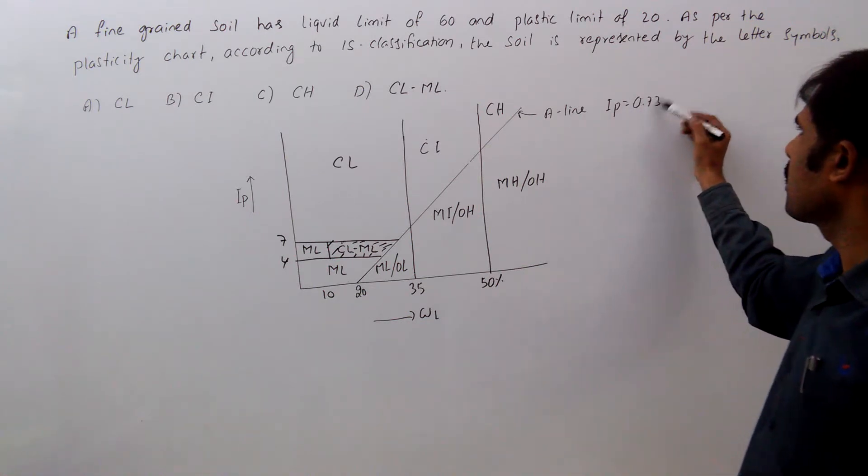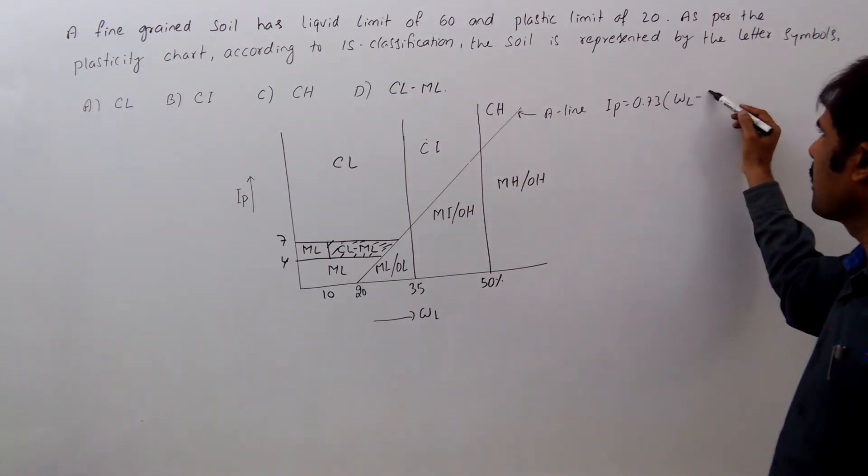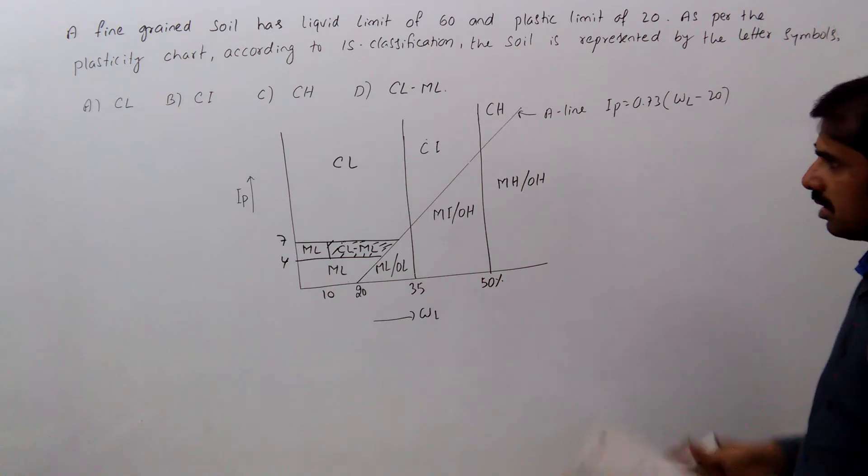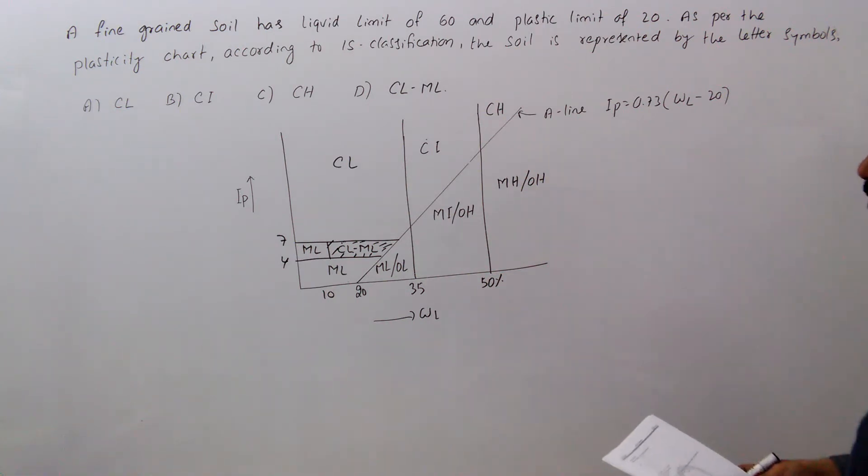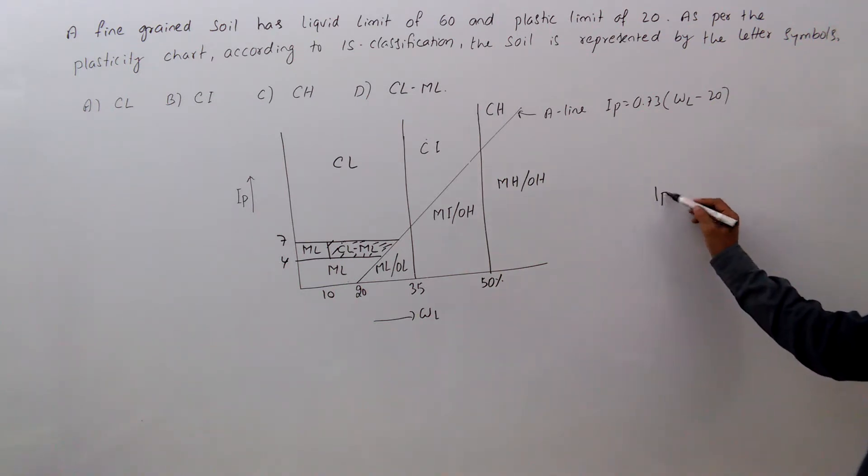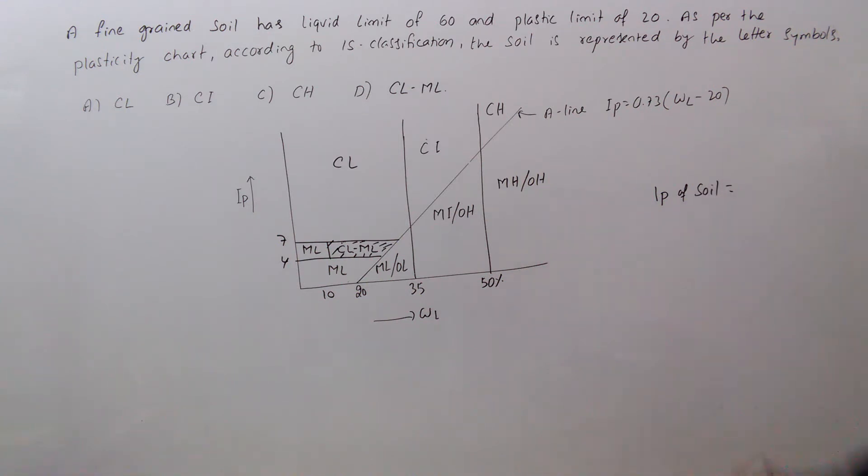IP equal to 0.73 into WL minus 20. That is the A line equation. Now we need to plot the soil. What is IP of soil? IP of soil equal to liquid limit minus plastic limit, that is 60 minus 20, 40% IP.